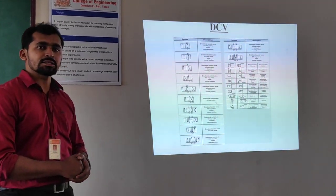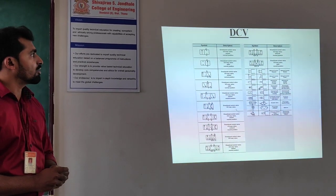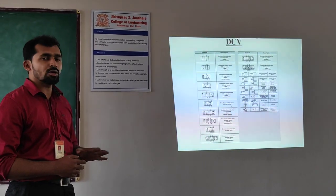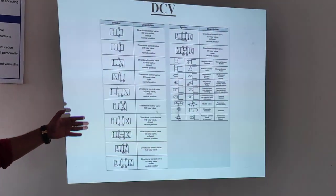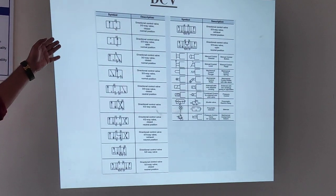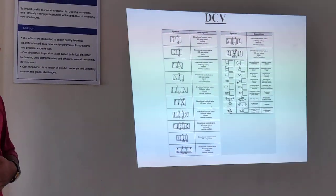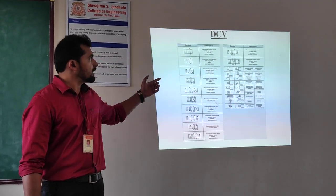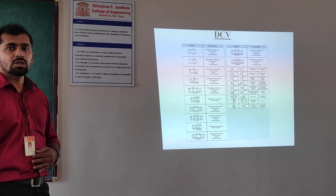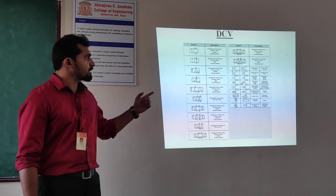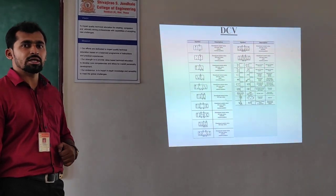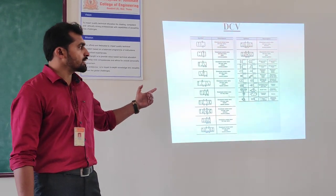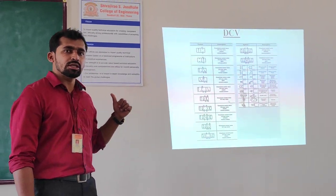Next is DCV — that is, directional control valve. A directional control valve is used to pass the fluid or compressed air in a particular direction. There are a number of directional control valves: 2x2, 3x2, 4x2, 5x2, 5x3, etc. Generally, for a single acting cylinder the 3x2 directional control valve is used, and for double acting cylinder the 5x2 directional control valve is used. We will discuss the directional control valve in detail when we see the electro-pneumatic circuit.